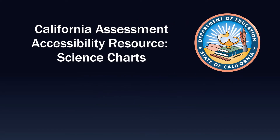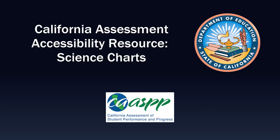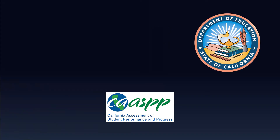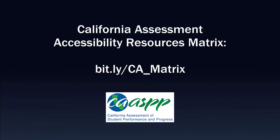This California Assessment Accessibility Resource video is sponsored by the California Department of Education. This video will demonstrate how to access and use science charts, which include the periodic table and reference sheets with formulas. This is a universal tool for the California Assessment of Student Performance and Progress, or CAASPP. For a list of applicable assessments, please refer to the California Assessment Accessibility Resources matrix by visiting bit.ly/CA_matrix.